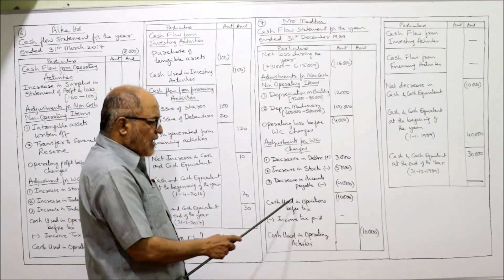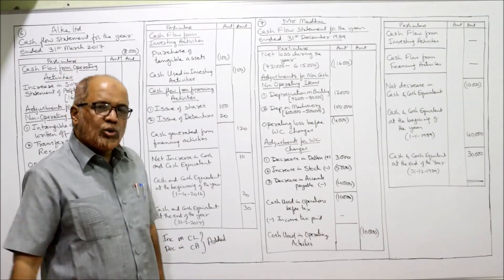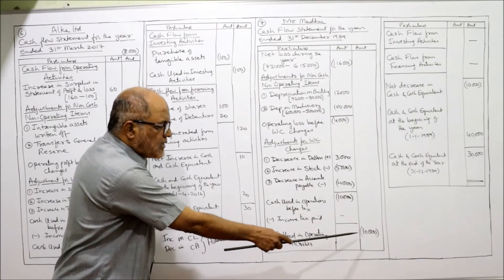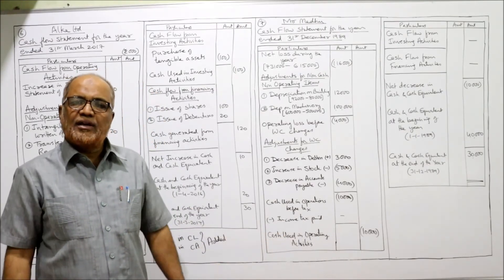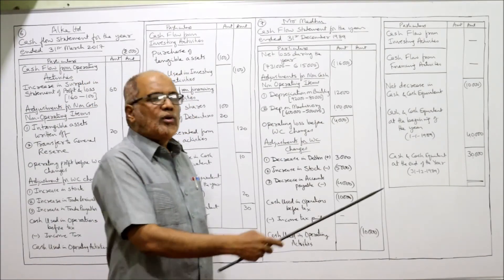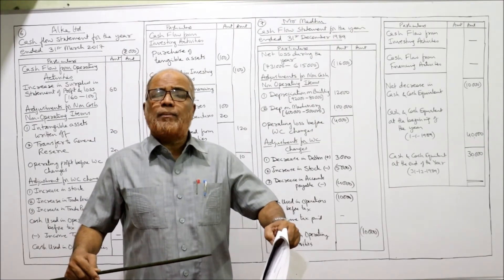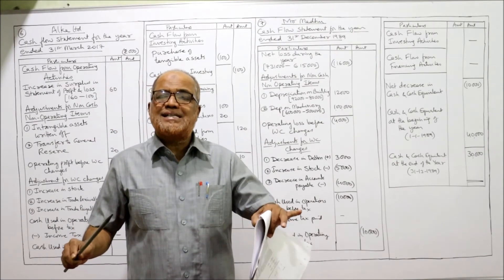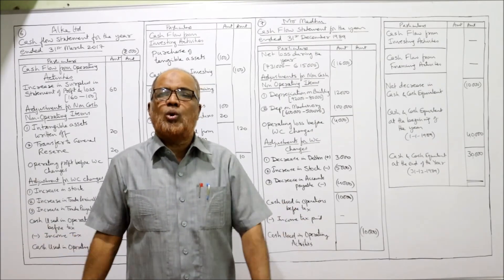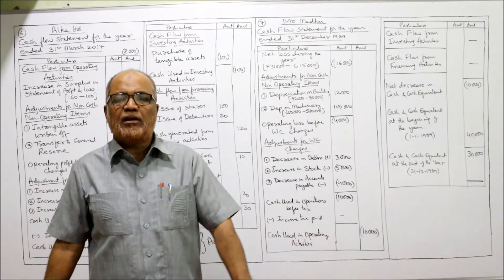There is no income tax, so cash used in operating activities is minus 10,000. Cash flow from investing activity: as specifically stated in the problem, there is neither purchase nor sale of any building or machinery — no asset purchased, no asset sold. Therefore, cash flow from investing activity is nil.